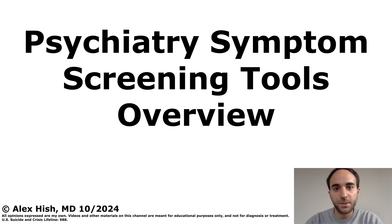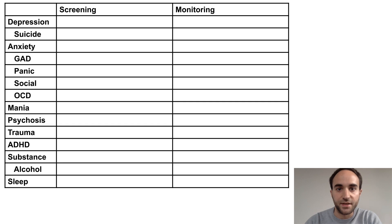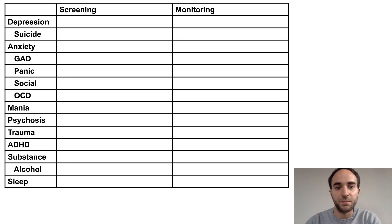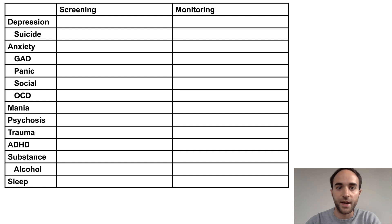This talk is an overview of symptom screening tools used in psychiatry. I'll review my preferred tools for measuring and tracking psychiatric symptoms for a variety of common symptoms. I'll separate the tools into screening tools, which should be used at initial patient encounters to screen for and differentiate disorders, and monitoring tools, which can be used at follow-up encounters to track symptoms over time.